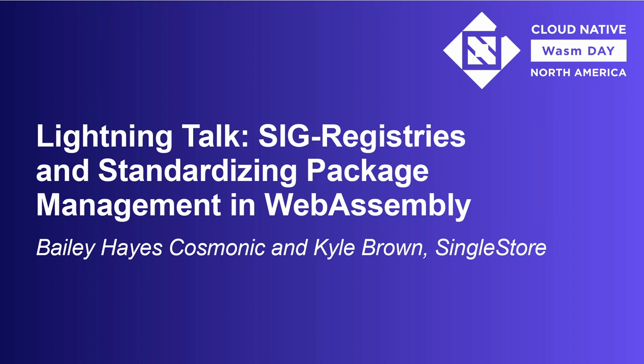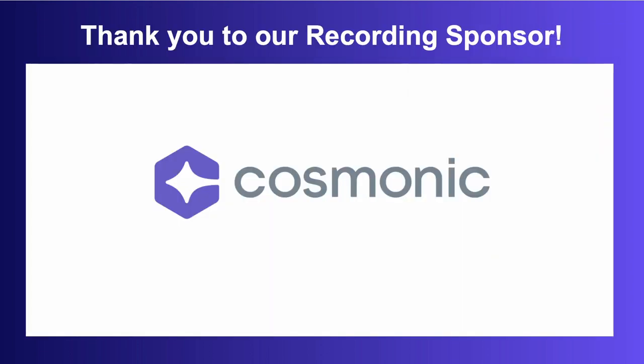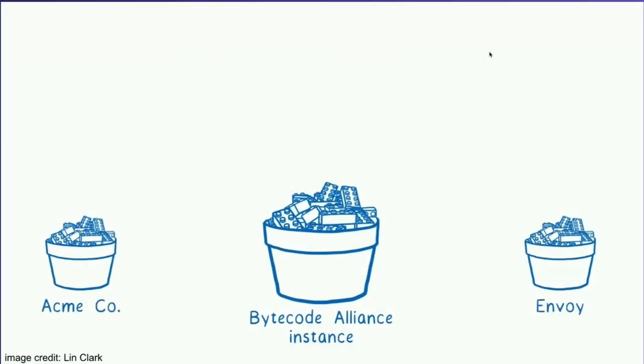But we don't just stop there. We want to make it so that we can collaborate across different instances, so that maybe an individual company is able to host their own private components. And we can also foresee several different communities out there that build specifically for Envoy — we already have a WebAssembly hub for Envoy — with use cases that are very specific to their community. So if you can imagine, several other different communities might exist, like Wasm Cloud.